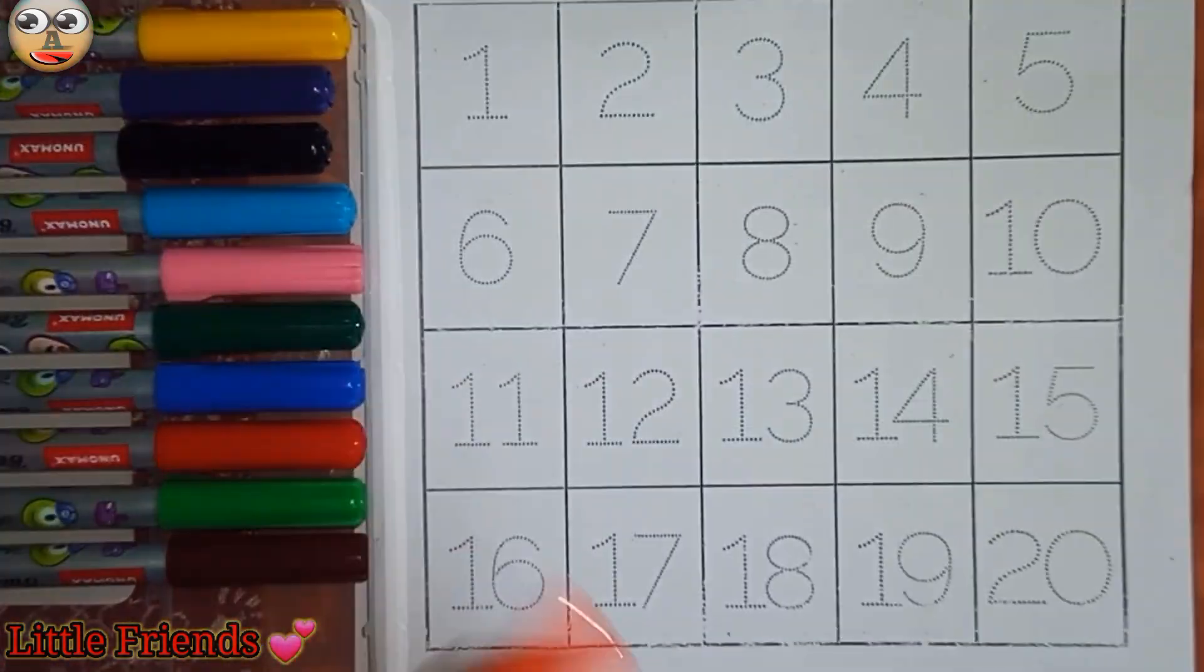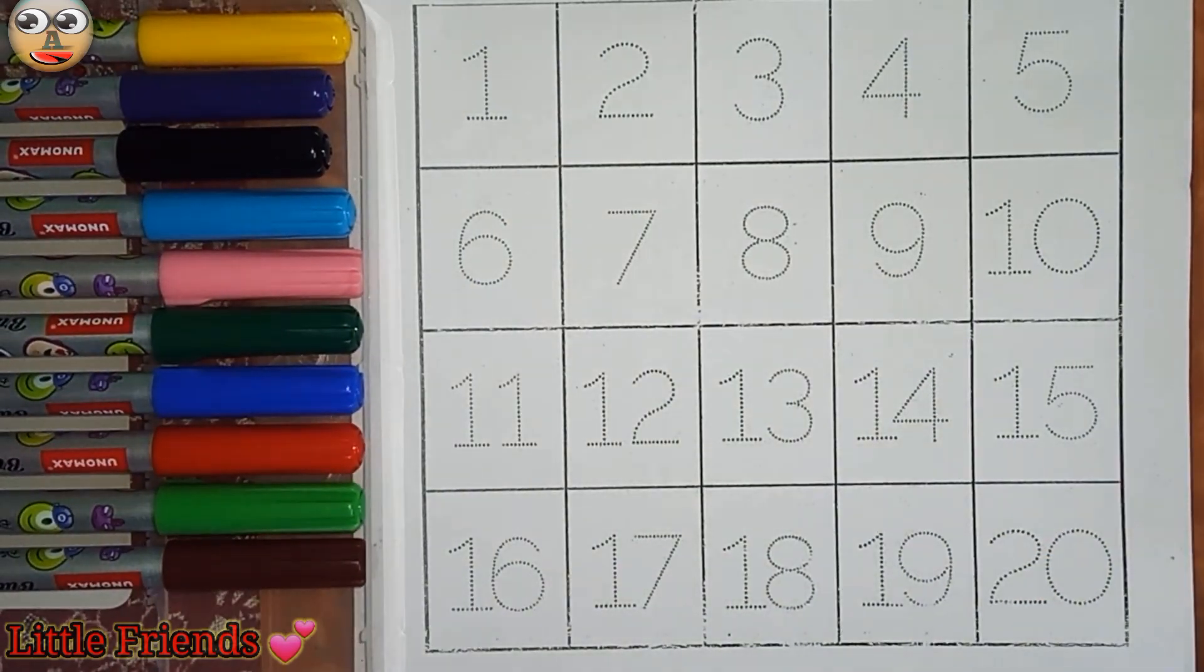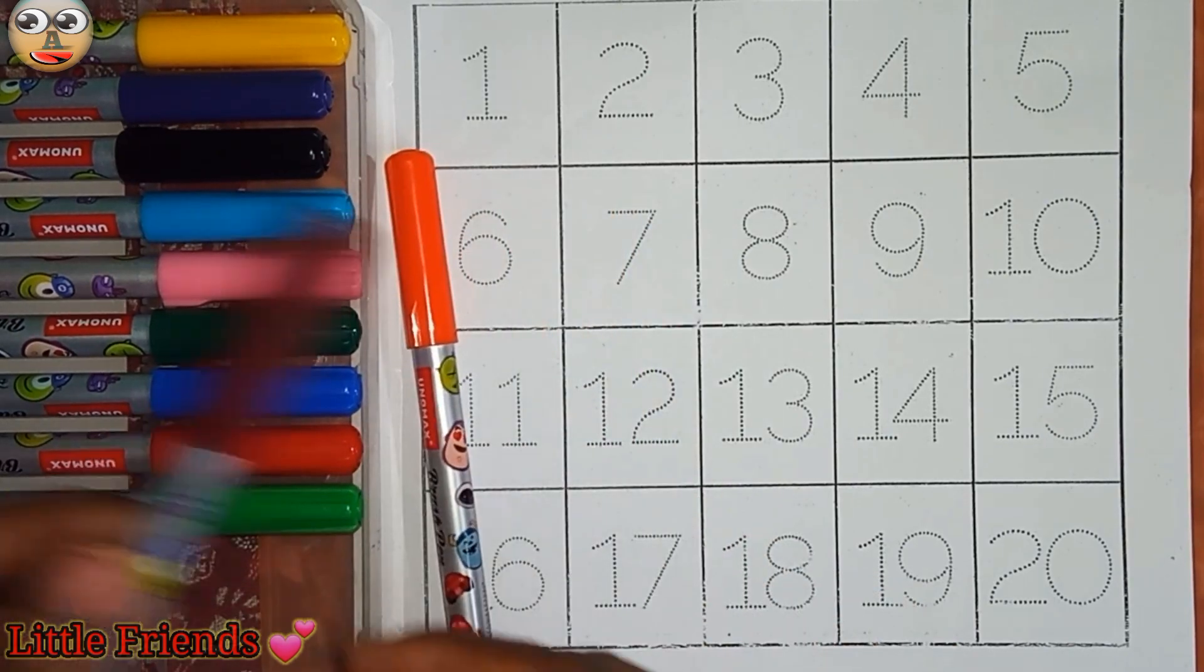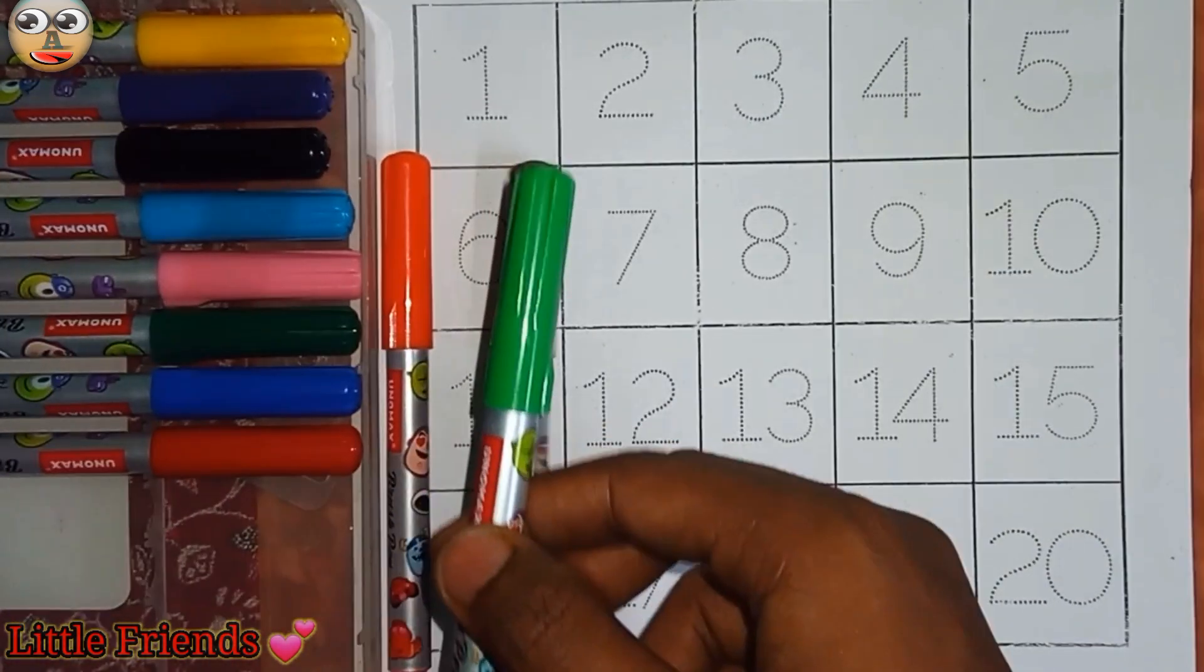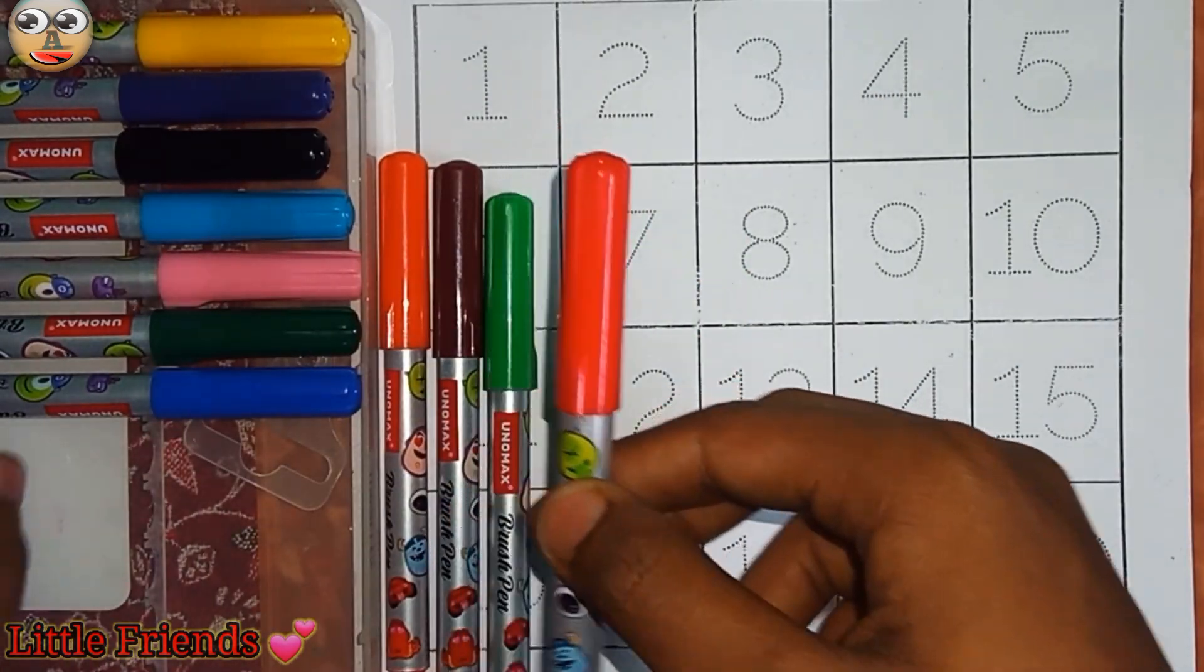Hello kids, today we will counting from 1 to 20. Let's know the color's name. This is orange color, brown color, green color, and red color.